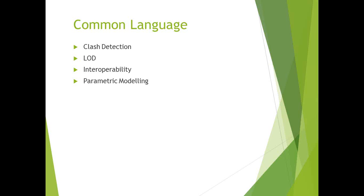Parametric modeling means that the digital representation includes both the knowledge, the information, and the graphic representation—and if you change one element within the model, you immediately see the ramifications. For example, if you originally designed with 4-inch, 15-mil studs at 24 inches on center, and your engineer comes back requiring 6-inch, 54-mil studs at 16 inches on center, you input that and immediately see all the resulting issues in the model.